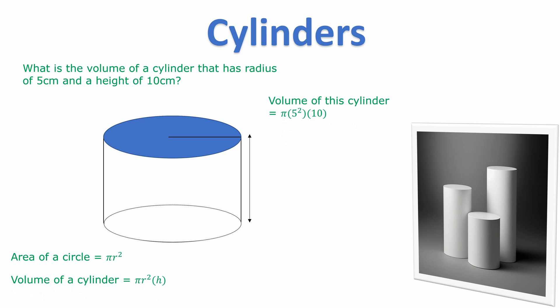So 5 squared is 25 times 10. That's 250 times π. So we just write the answer as 250π.